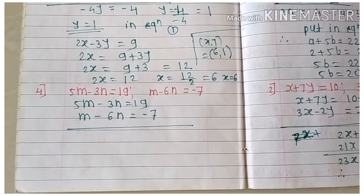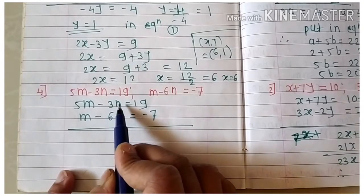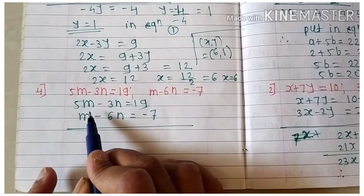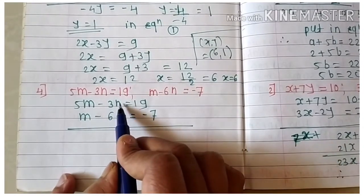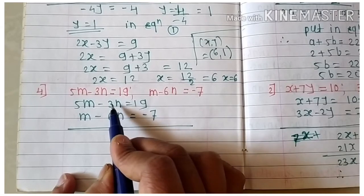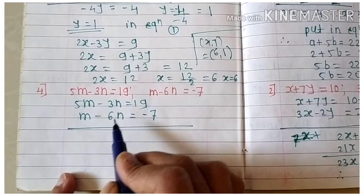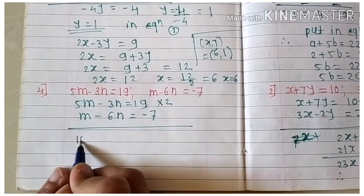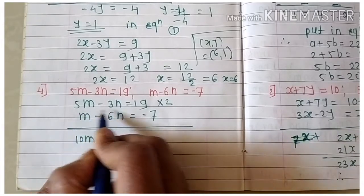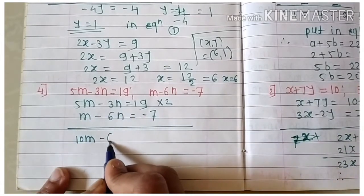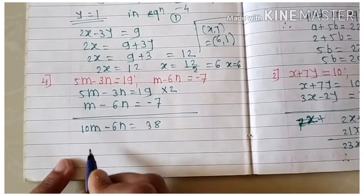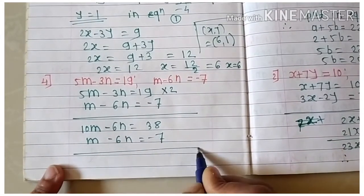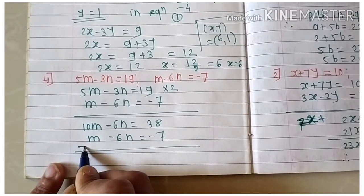To cancel out n, we need coefficient 6, so multiply equation one by 2. After multiplying, we get 10m minus 6n equals 38. The second equation remains as it is: minus 6n equals minus 7. Taking subtraction — signs become opposite — we get 9m equals 45.